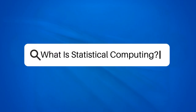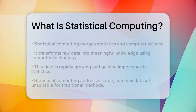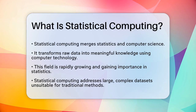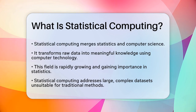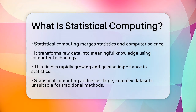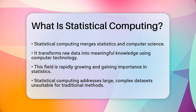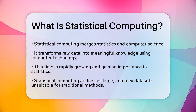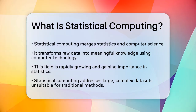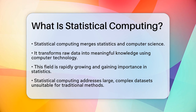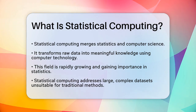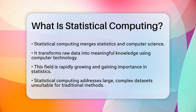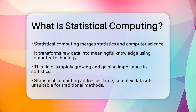What is statistical computing? If you're curious about how statistics and computer science come together, you're about to uncover a fascinating field that's revolutionizing the way we analyze data. Statistical computing, also known as computational statistics, is the intersection of statistics and computer science. It's all about using computers to transform raw data into meaningful knowledge.